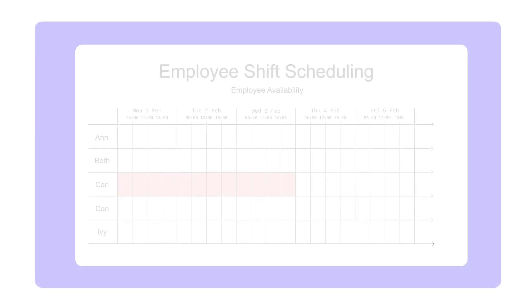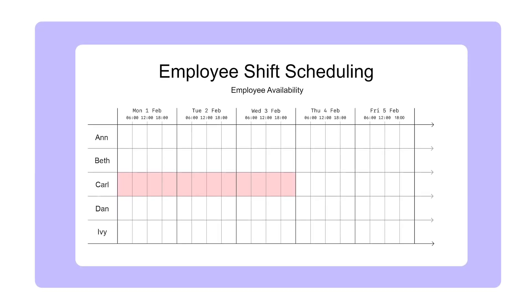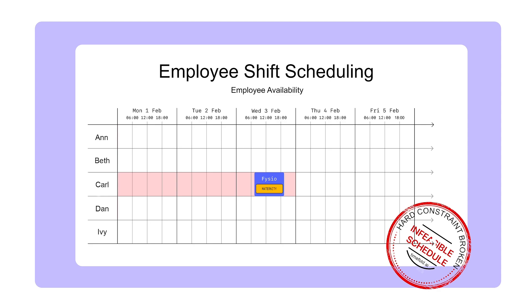For example, when Carl is a part-time contractor who only works on Thursday and Friday, he can only be assigned shifts on those days and not any other days. Doing so would once again break a hard constraint, making the schedule infeasible.